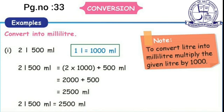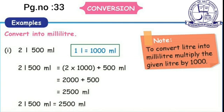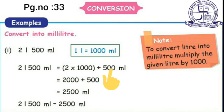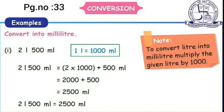Example: convert into milliliter. We know that 1 liter equals 1000 ml. For 2 liters 500 ml: first convert 2 liters to milliliter — 2 into 1000 equals 2000 milliliter. Then add the 500 ml: 2000 plus 500 equals 2500 milliliter. So 2 liter 500 ml equals 2500 milliliter.